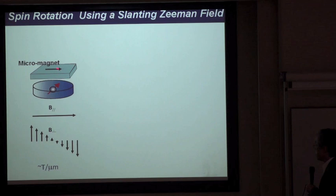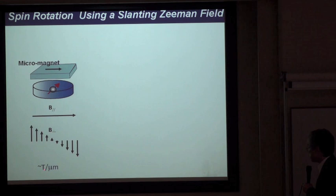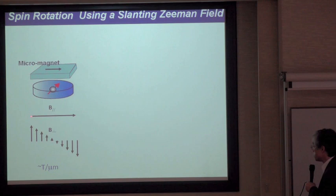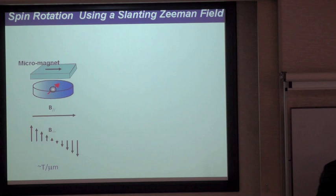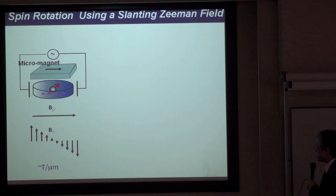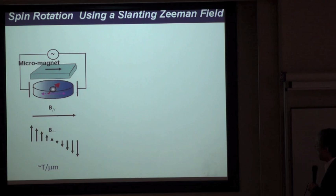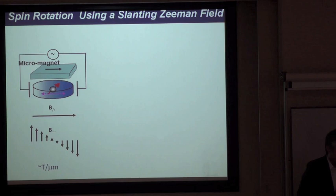Putting the micro-magnet on top of the quantum dot generates two kinds of stray fields. One is the field gradient, perpendicularly oriented with a slope of about one tesla per micron. The other component is an in-plane field, which is a statically fairly uniform magnetic field. We then apply the AC electric field by irradiating microwave to the dot and swing the electron to utilize this field gradient.